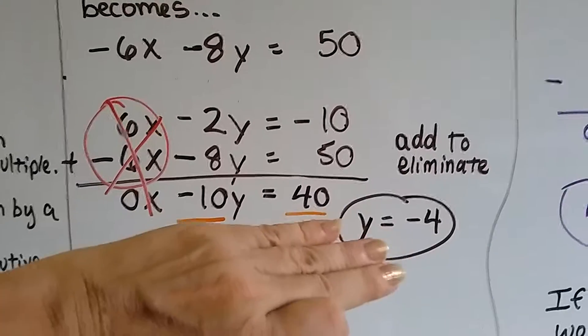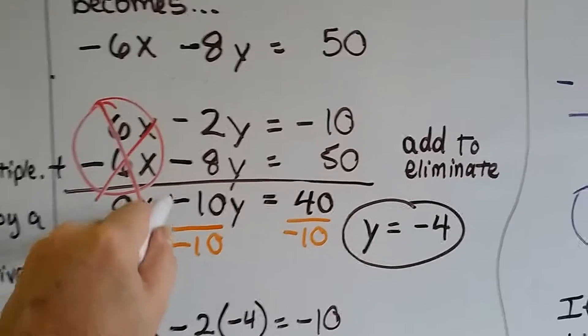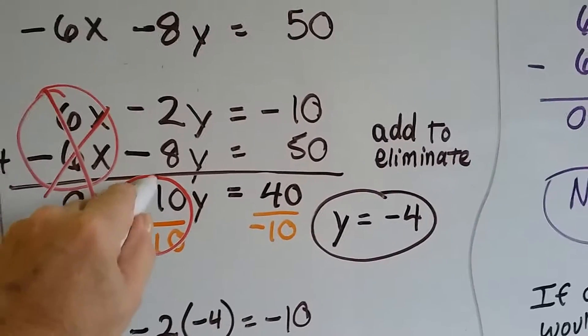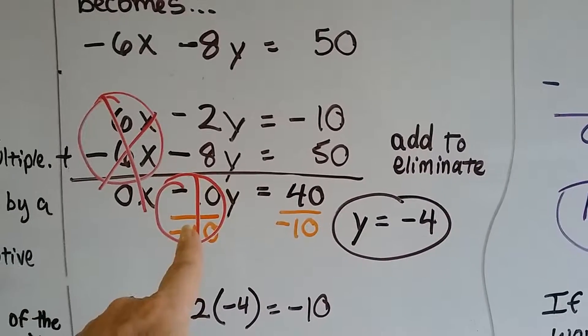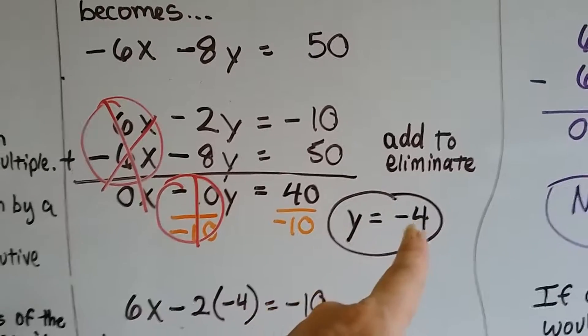Now we've got -10y = 40. We divide each side by negative 10 to get y by itself. That creates our invisible one, and 40 divided by negative 10 is negative 4. So y is negative 4.